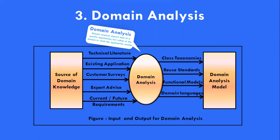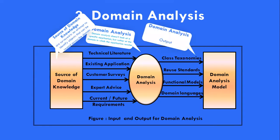This figure illustrates the key inputs and outputs for the domain analysis process. Sources of domain knowledge are surveyed in an attempt to identify objects that can be reused across the domain. The outputs of domain analysis include class taxonomies, reuse standards, functional models, and domain languages, which together make up the domain analysis model.